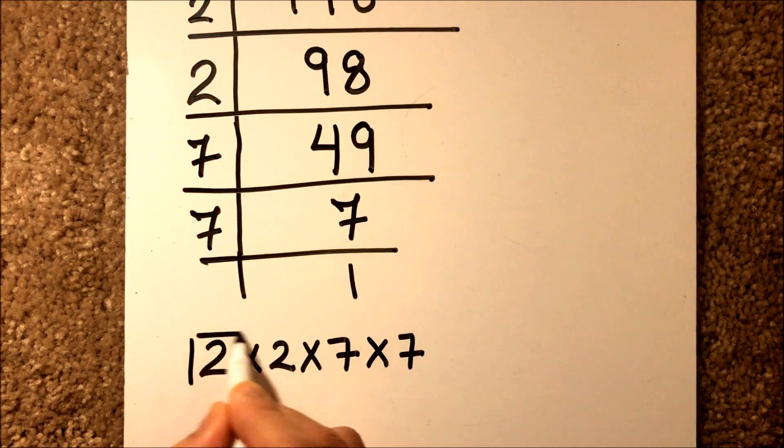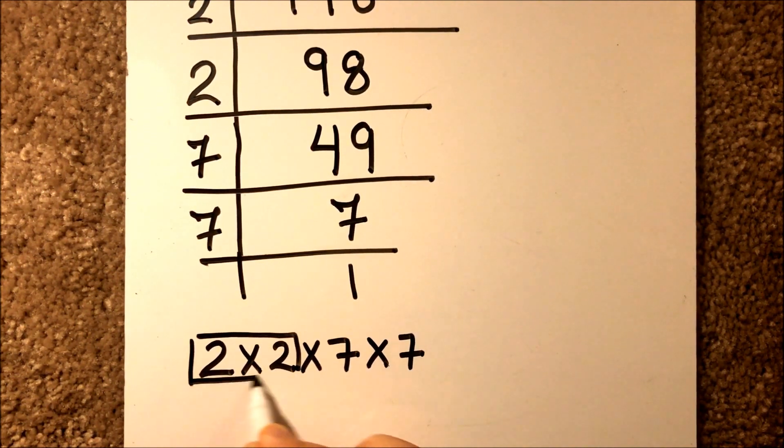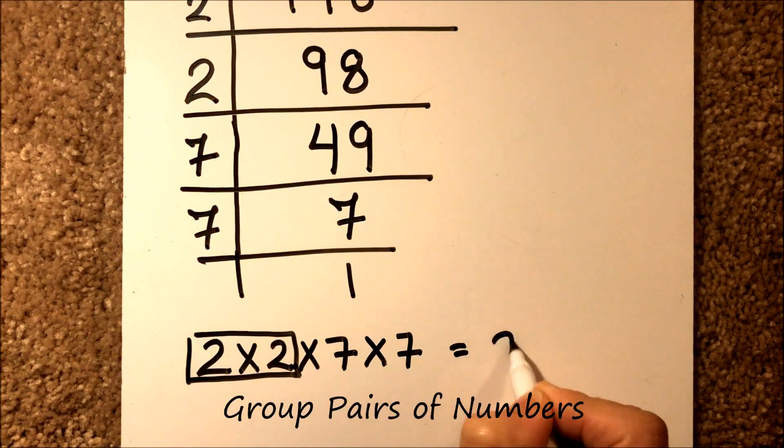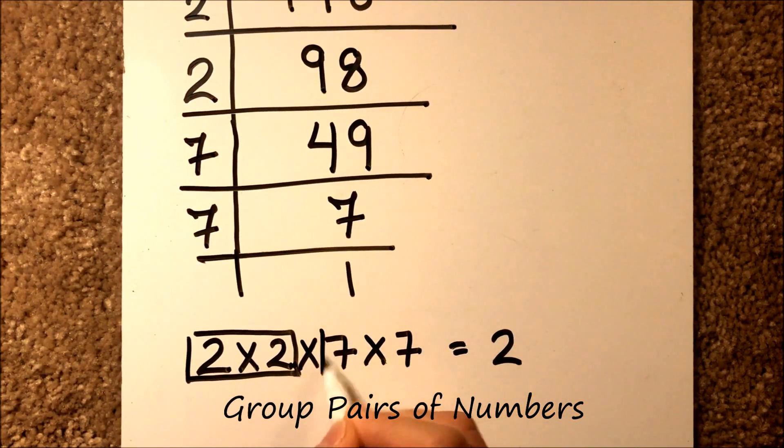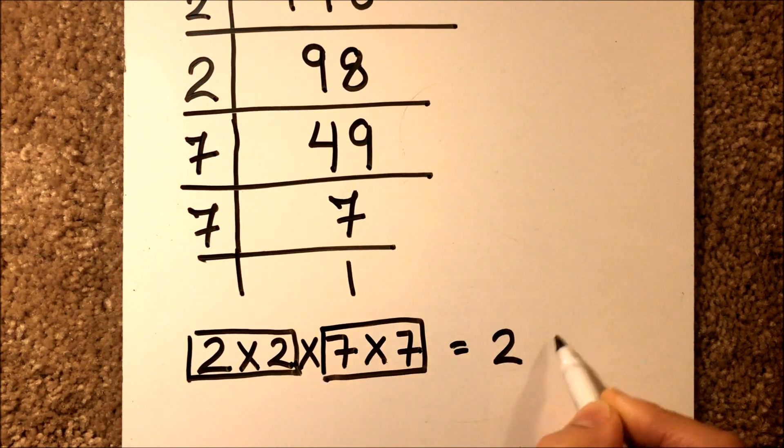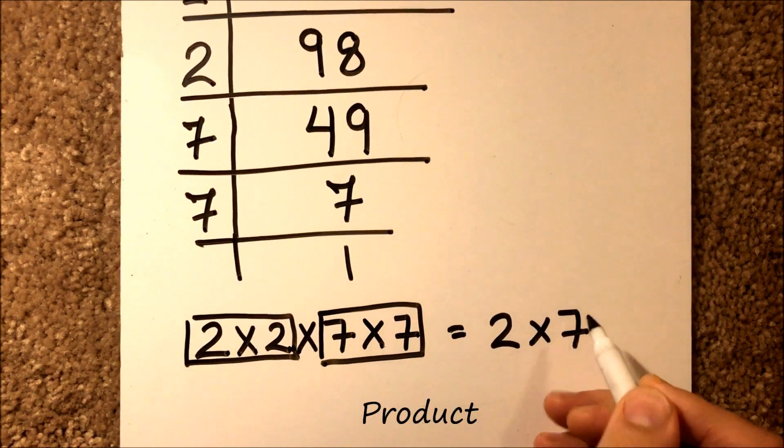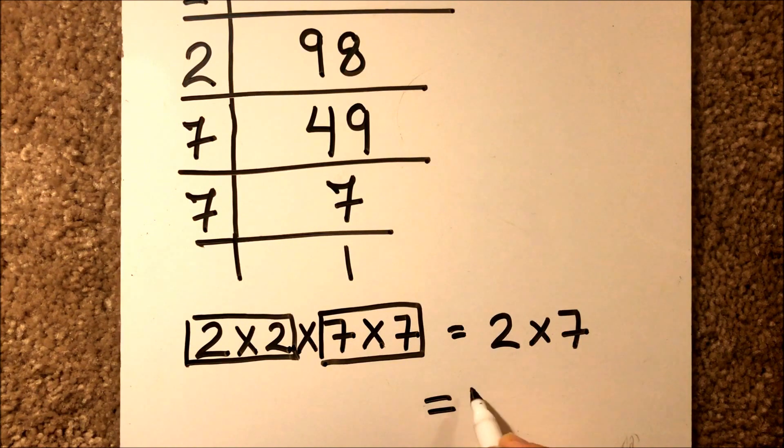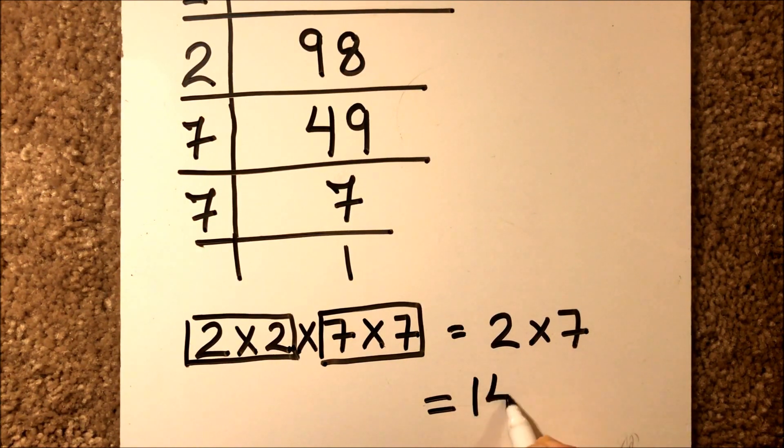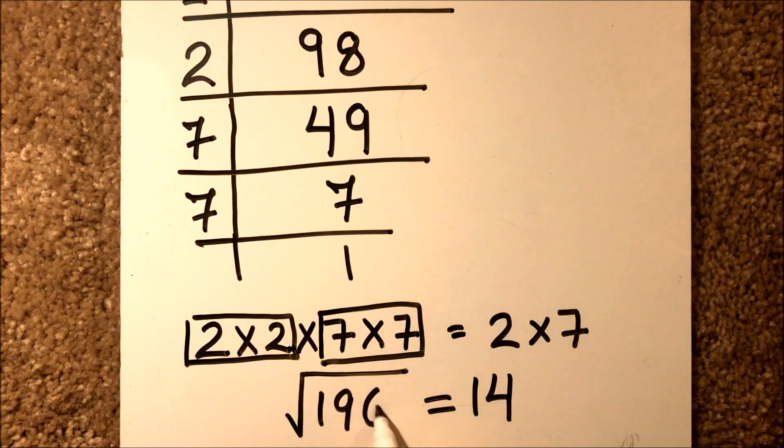For every pair, we will write the number once. A pair of 2, so we will write 2, and a pair of 7, so we will write 7. We will take the multiple of these two numbers, so the multiple is 14. Therefore, the square root of 196 is 14.